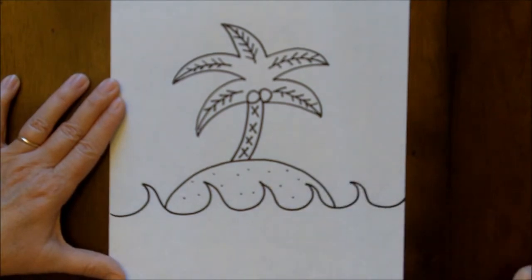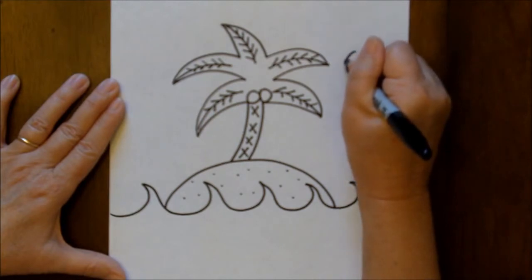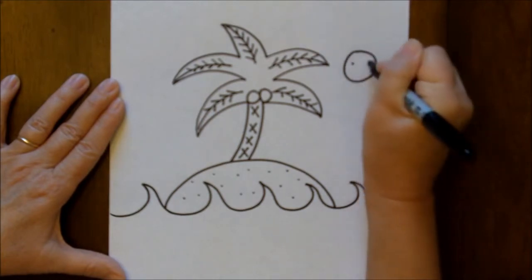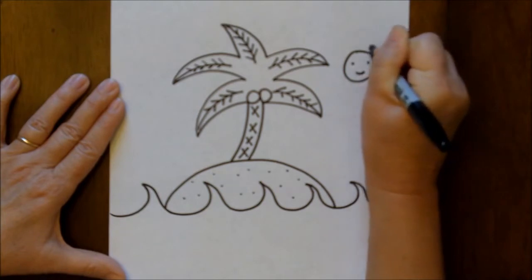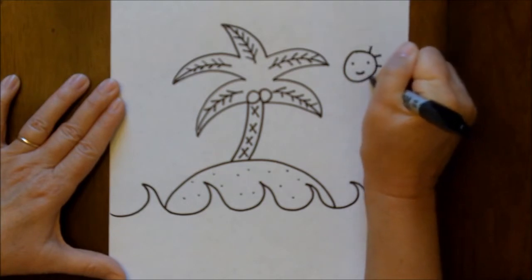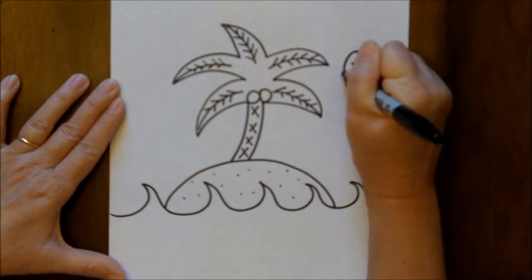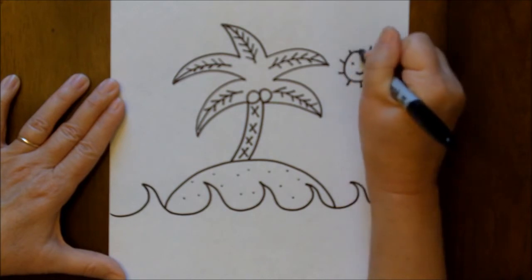You want to put a shell or two on there as well. You can even put a sun, a smiling sun, let's say, with some little rays coming out. There you go.